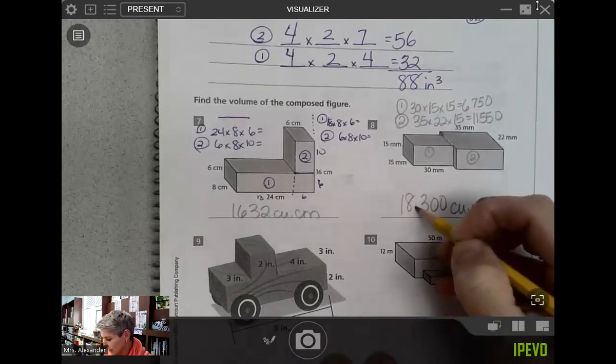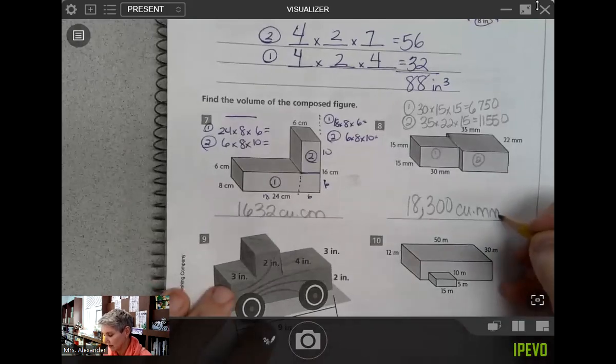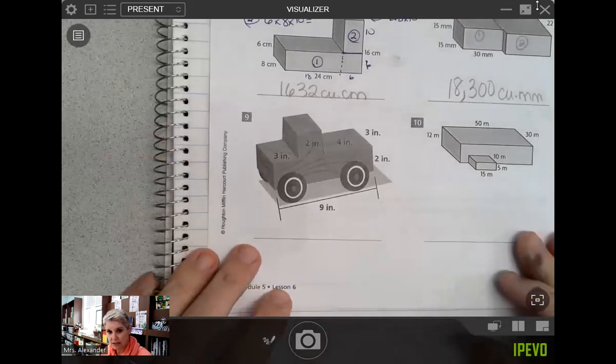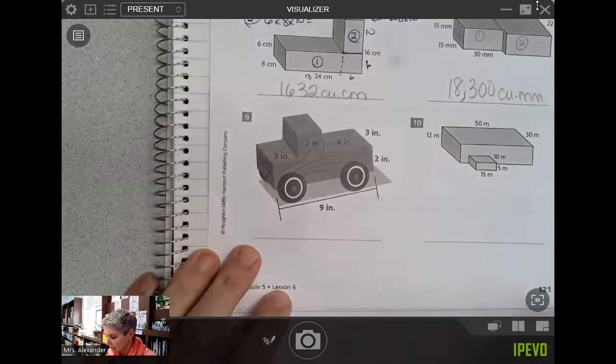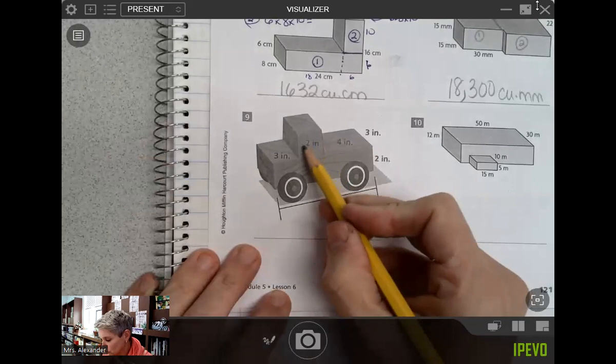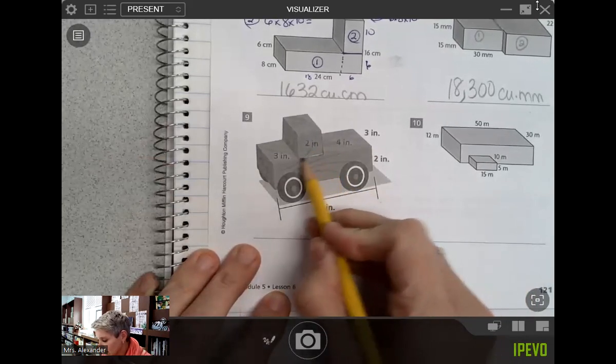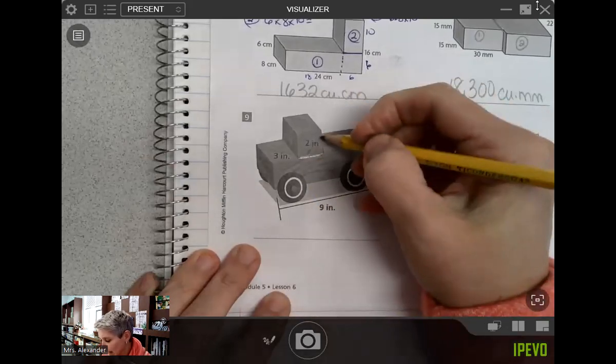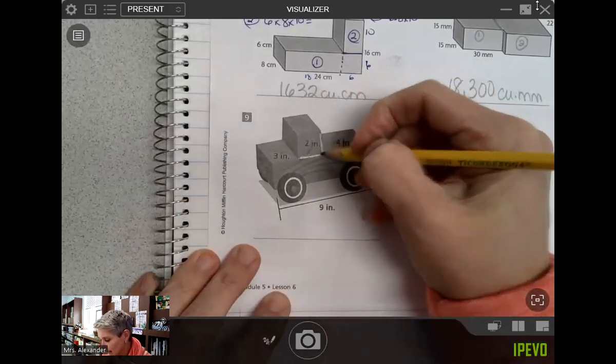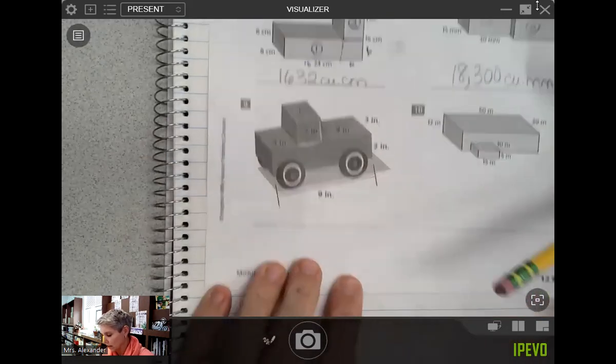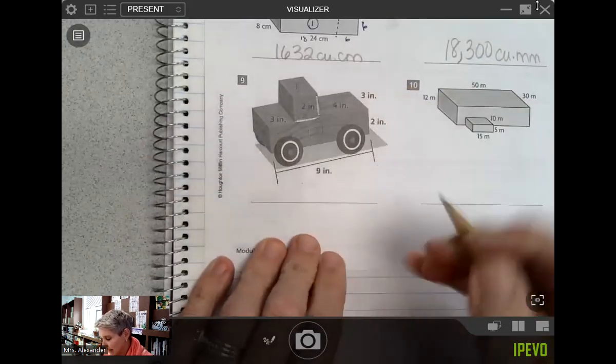That one had some big numbers in it, so be careful with your multiplying. Let's look at number 9, this little toy truck. Some people ask me, what is this 2 labeling? Well, if we draw a line here, this line has not been labeled. That 2 is labeling the height of that little figure. So I'm going to call that figure 1 on top and figure 2 on the bottom.